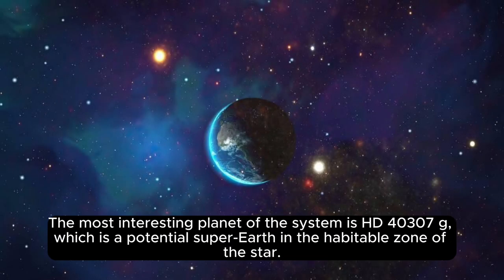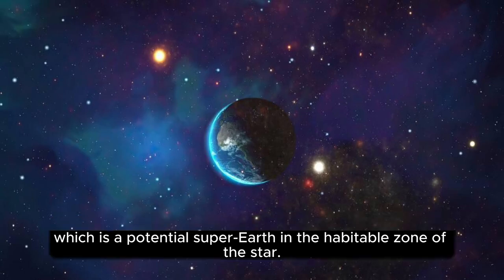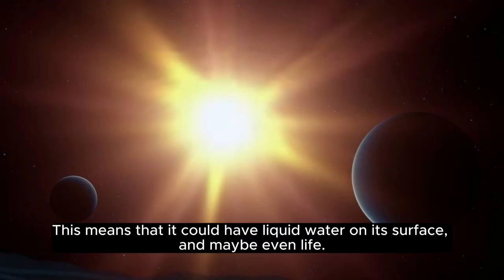The most interesting planet of the system is HD 40307 G, which is a potential super-Earth in the habitable zone of the star. This means that it could have liquid water on its surface, and maybe even life.